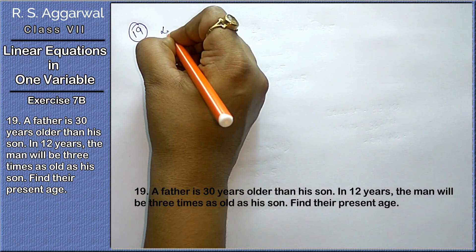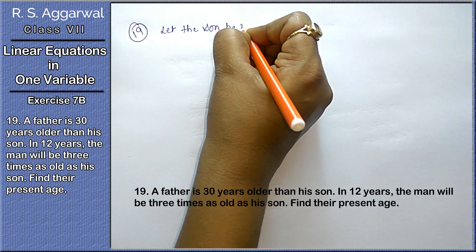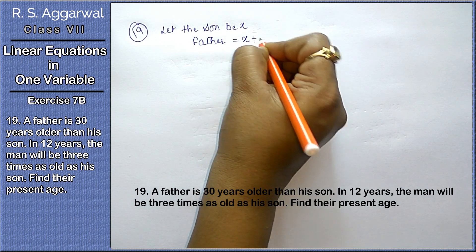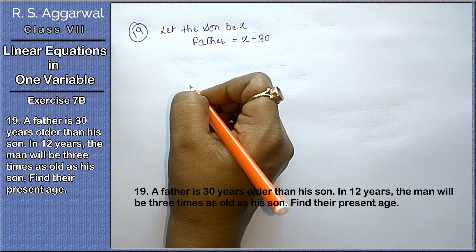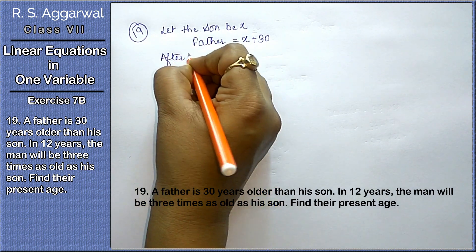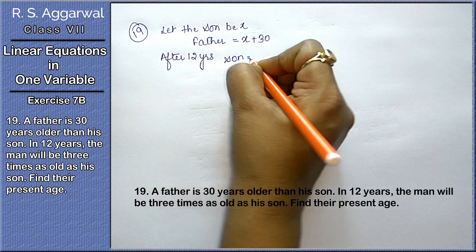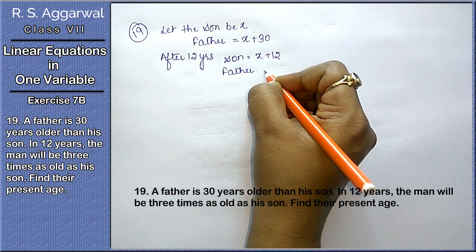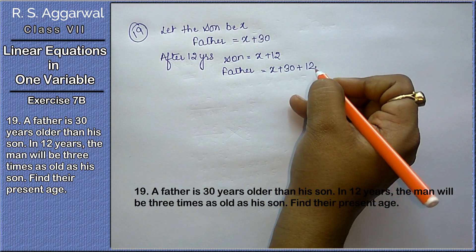Let the son's age be x. Since the father is 30 years older than his son, the father's age is x plus 30. Now, in 12 years — after 12 years — the son's age will become x plus 12, and the father's age will become x plus 42, because we add 12 years to his present age.